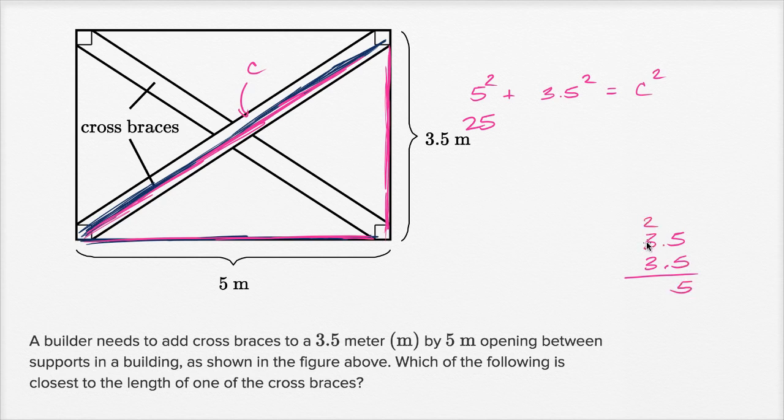5 times 5 is 25, 3 times 5 is 15 plus 2 is 17. Now using the 3, 3 times 5 is 15, 3 times 3 is 9 plus 1 is 10. You have two digits to the right of the decimal point, so this is going to be plus 12.25.